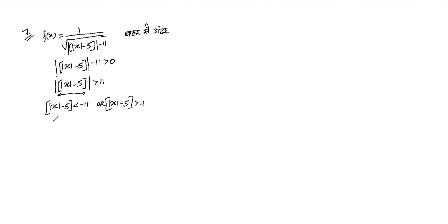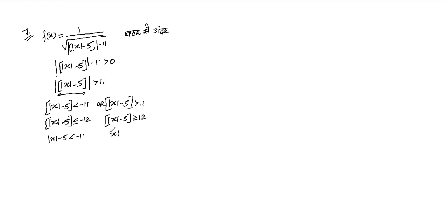When working with greatest integer, we need equal-to cases. If a number's greatest integer is less than -11, then |x-5|'s greatest integer must be greater than or equal to 12. We're removing functions one at a time — first the root, then the outer mode. Now removing the greatest integer: if a number's greatest integer is ≤ -12, the number is less than -11. For the right side, if mode |x-5| ≥ 12, this case gives |x-5| less than -6, which is impossible — rejected.